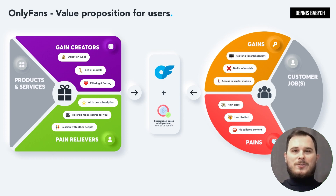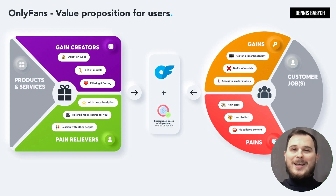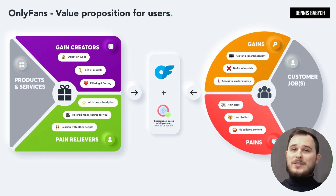For example, you might create an OnlyFans clone for models and their audience, similar to Spotify. Users struggle with high prices for individual content subscriptions and finding the right models to follow. Imagine a platform where users can subscribe to specific model groups and receive five times more tailored content for only $30 per month. Users can search models by various parameters such as tattoos, weight, height, etc. Additionally, users can create a donation goal with others and when achieved, the content creator will create the desired content. Keep in mind that small companies can easily outplay big industry leaders who cannot react as fast.